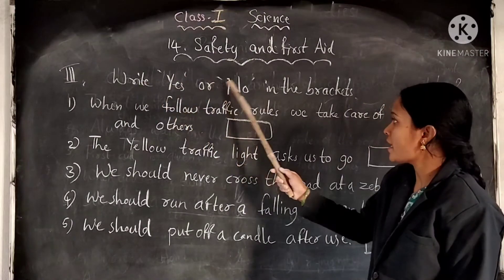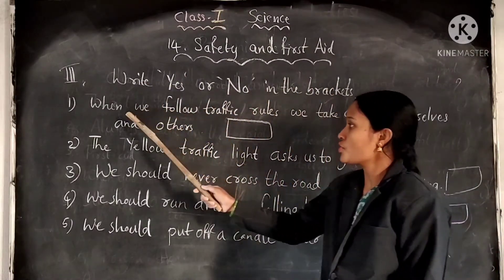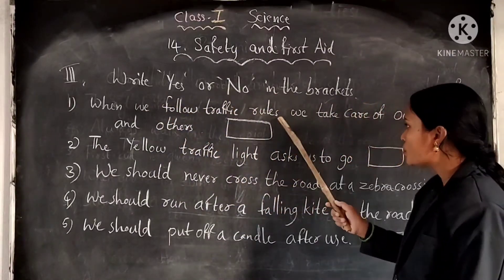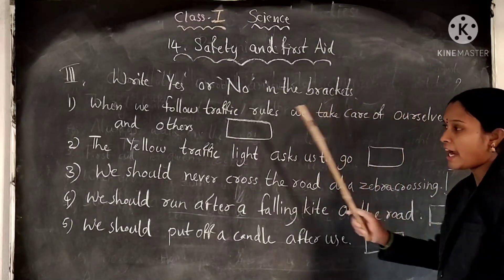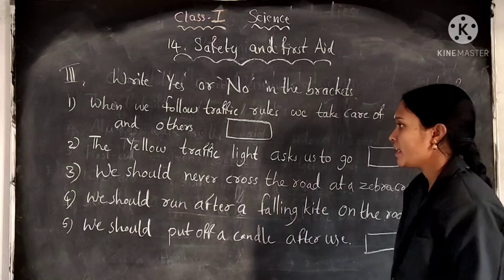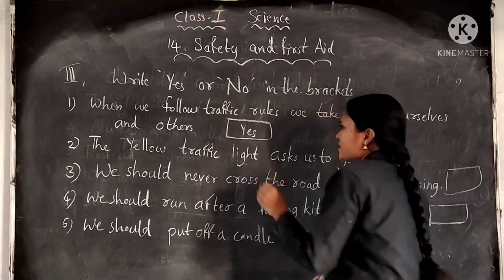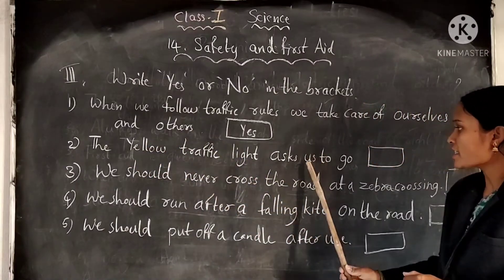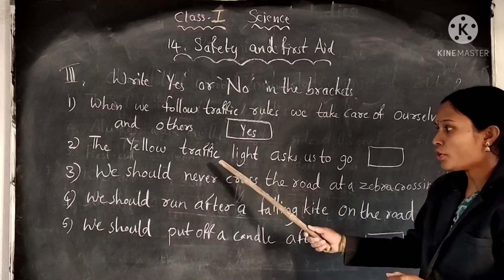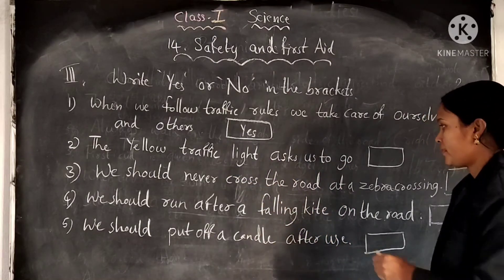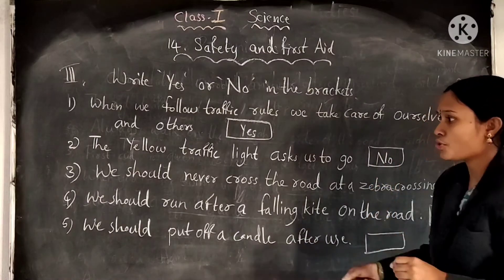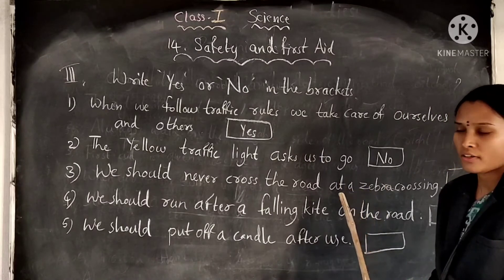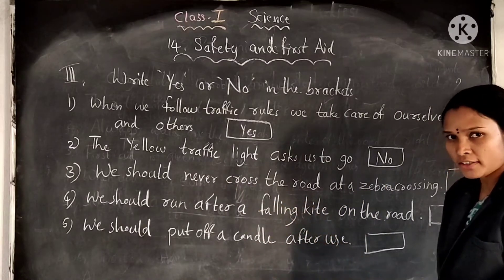Third activity: write yes or no in the brackets. First question: when we follow traffic rules, we take care of ourselves and others — yes. Second one: the yellow traffic light asks us to go — no, the green light asks us to go. Third one: we should never cross the road at a zebra crossing — no.